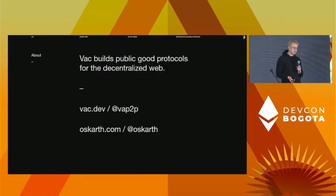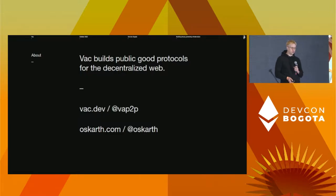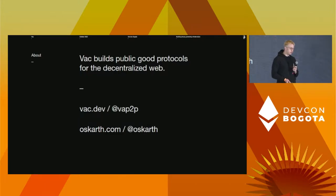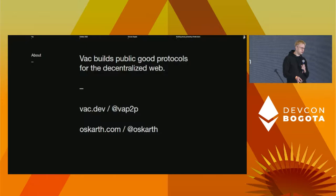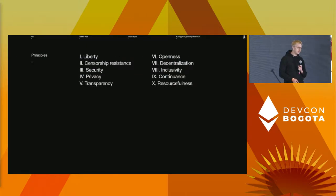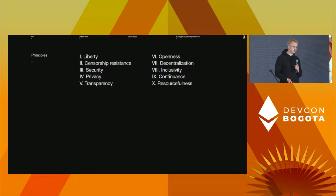Briefly about Waku and me: I'm the Director of Research at Waku, and we build public good protocols for the decentralized web with a focus on privacy and communication. We do applied research based on which we build protocols, libraries, and publications, and we're also the custodians of protocols that reflect a set of principles. Waku has its origins in the Status app and was built by improving on the underlying protocols and infrastructure.